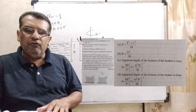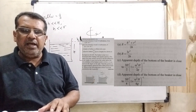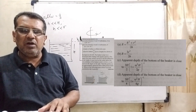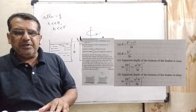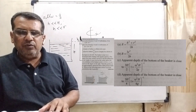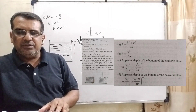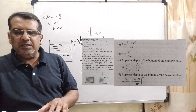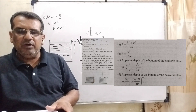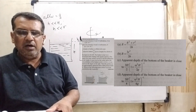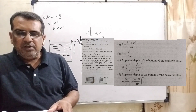Here we have four options. First option: capital R = (h² + r²) / (2h). Second option: capital R = 3r² / (2h). Option C: apparent depth of the bottom of the beaker is close to (3h/2) × [1 + (ω²H)/(2g)]⁻¹.